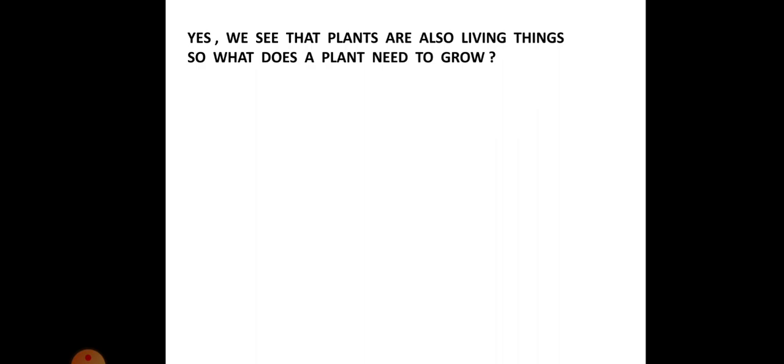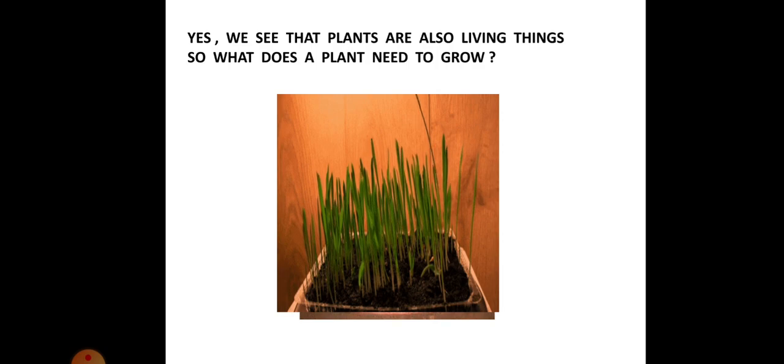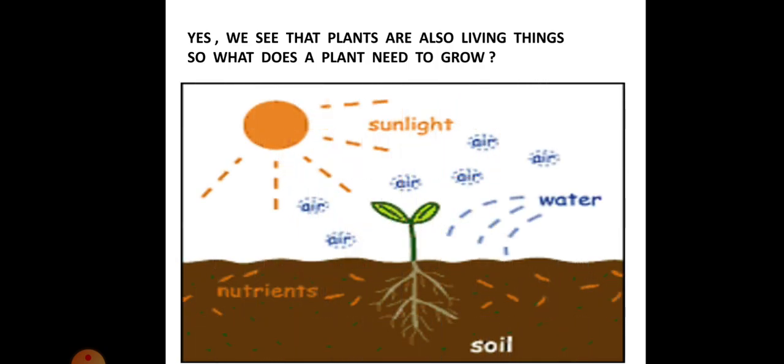Now what did we learn from it? So we see that plants are also living things. So what does a plant need to grow? Yes, they are living things. Correct. Now what do they need to grow? They need sunlight, water, soil and air to grow.